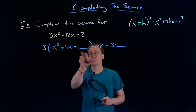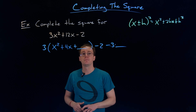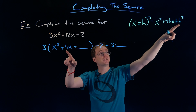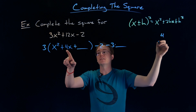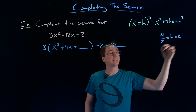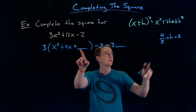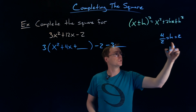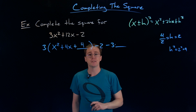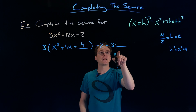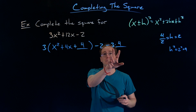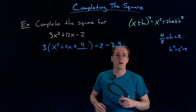Now we can figure out what that constant term needs to be inside the parentheses and put it in our blank spaces. Inside the parentheses we have our x squared and our 2hx linear term. To find h, we look at that number in front of x — in this case, that is 4. So we take that 4, our 2h, and divide it by 2, giving us h is equal to 2. The constant term we want here is not just h but h squared, so 2 squared gives us 4. That is the constant term we need to add into the parentheses to make this a perfect square trinomial. And that's also the constant we need to subtract outside, but we're really subtracting 3 times 4, so that's going to turn into a 12.